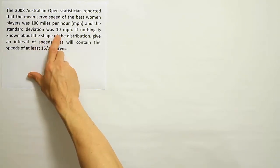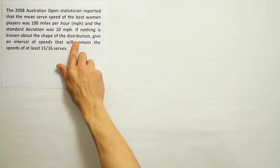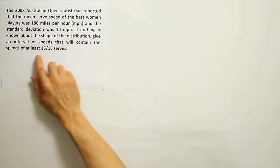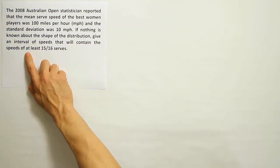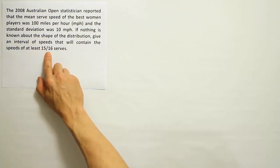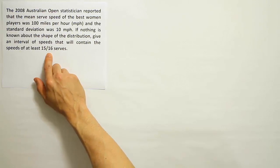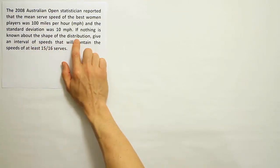This idea that it says if nothing is known about the shape of the distribution, that's a key phrase that indicates Chebyshev's theorem. Also we have this phrase at least. Remember Chebyshev's theorem tells us the minimum percentage and uses that phrase at least, you know, this proportion is within the interval. They provided the proportion and tell us that there's nothing known about the shape of the distribution.